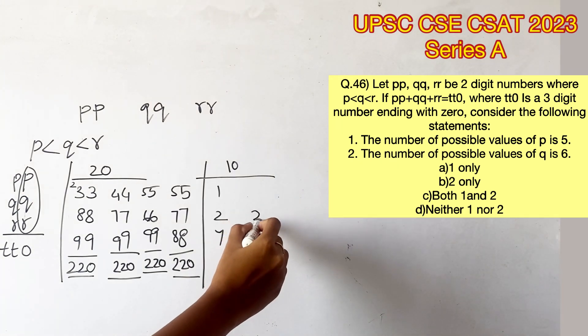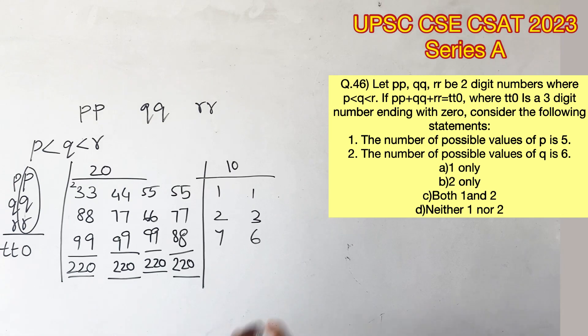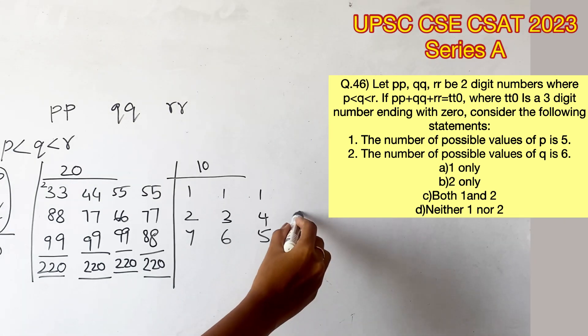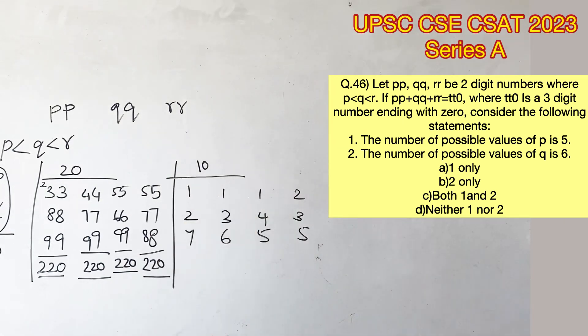Next case would be 6 in the place of R, 3 in the place of Q, and 1 in the place of P. The next case would be 5, 4, and 1 respectively, and then 5, 3, and 2 respectively.